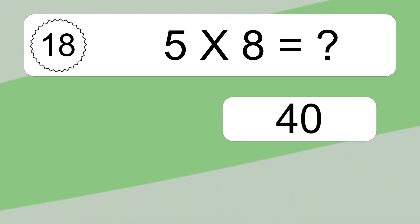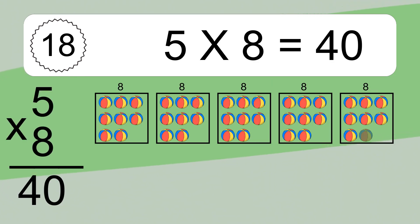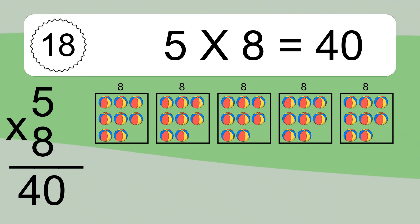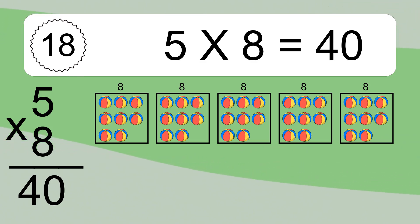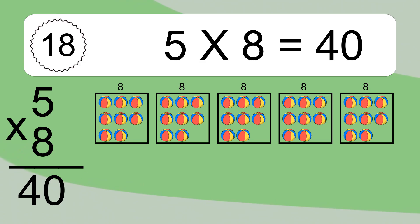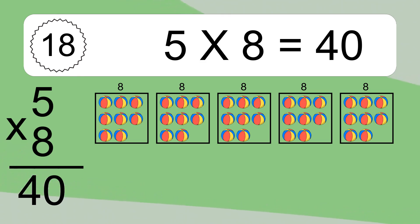5 times 8 equals what? 5 times 8 equals 40. We have 5 boxes, and each box has 8 colorful balls inside. If you count all the balls in all the boxes together, you will have 5 times 8 balls. This equals 40 balls.